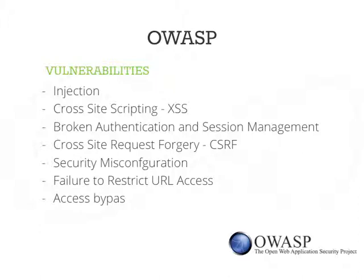OWASP — the Open Web Application Security Project — makes all kinds of useful apps for learning about security. One of the things they do each year is list the 10 most used vulnerabilities inside websites that hackers exploit. Things that come back every year include SQL injection, cross-site scripting, cross-site request forgeries, access bypass, and stuff like that. Later in the session I'm going to talk about these vulnerabilities and what Drupal APIs do to help you secure your site against these threats.